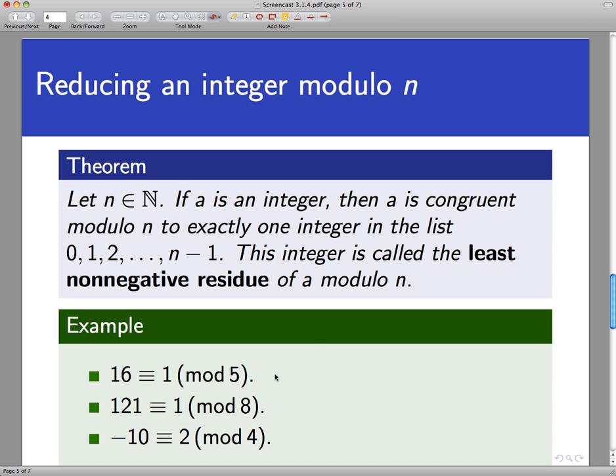So let's look at some examples here. These are things we've already seen. So 16 is congruent to many, many things mod 5, but there's only one least non-negative thing that's congruent to mod 5, and that number is 1.